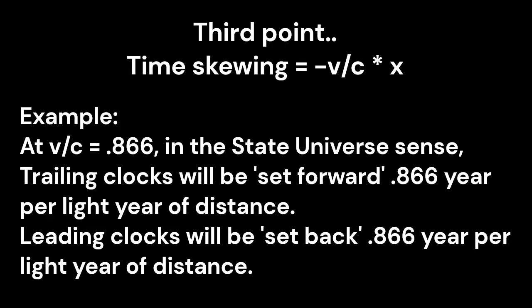And the third point I kind of glossed over, I said that time skewing was v over c times x. Well, it's actually, algebraically, minus v over c times x. And again, what that means is in the state universe sense, these clocks are all synchronized in the reference frame sense, but in the state universe sense, if you stop the universe and check the clocks, you'd find that the synchronized clocks, the trailing clocks, would be set forward in time 0.866 year per light year of distance behind. Every light year back, the clocks will be set forward that 0.866 year. That's a lot. And leading clocks will be set back in time 0.866 year per light year of distance ahead. So you can see that in the graphics here.